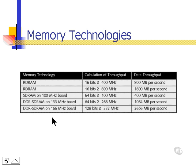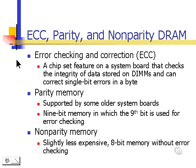These are some of the fastest memory technologies available today. Other terms you might see are error checking and correction — ECC. This is a chipset feature on a system board that checks the integrity of the data stored on a DIMM, and it can correct single-bit errors in a byte of data. A byte contains 8 bits. Parity memory is another method supported by some older system boards in which a 9th bit was added for error checking. Most memory we buy today is either ECC or non-parity memory, which is slightly less expensive and doesn't have error checking.